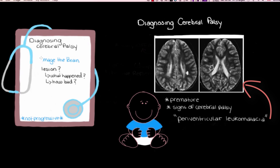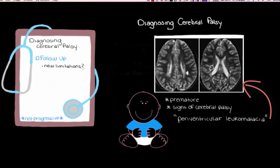Even if we find a lesion and feel confident in our diagnosis of cerebral palsy, we'd still need the child to come back regularly for follow-up visits as he grows. Although the underlying brain damage is not progressive, new motor limitations may emerge as he develops and his brain is challenged in new ways — like running up stairs or climbing trees. This is also why it can be difficult to identify the specific type of cerebral palsy at a young age; we'll likely need to observe him over the next months or years to see a clearer pattern of his motor abilities and limitations before making a more precise diagnosis.